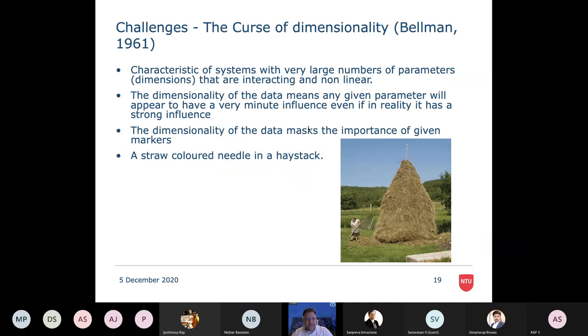Another challenge is the curse of dimensionality. This was a term that's been around some time, but essentially it's characteristics of highly complicated systems. What happens is that we effectively lose information in the sheer depth of data that we have. It's trying to pick out a single star in a galaxy. The dimensionality of the data masks what's important. It makes it hard to find the key features because we're trying to look simultaneously at 50,000. We're trying to find a straw coloured needle in a haystack or even a field of haystacks.